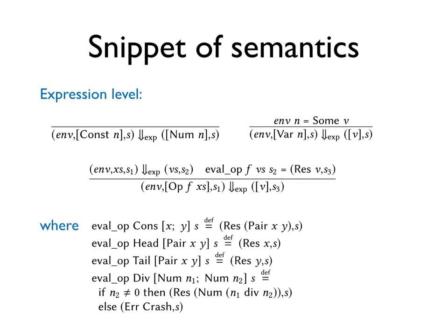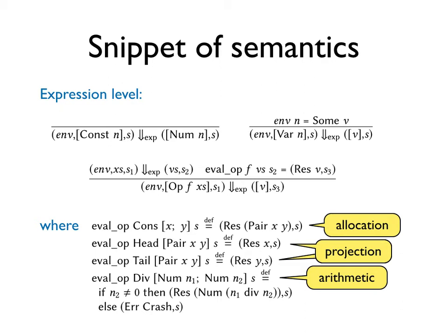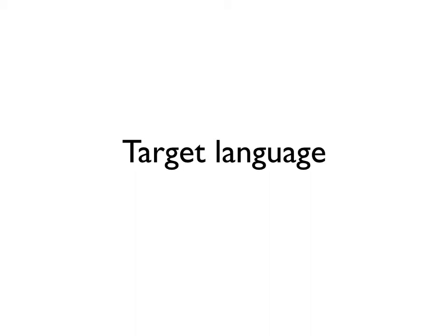The semantics of primitives is defined in terms of eval_op. Here we see the semantics of cons, which performs allocation. And of head and tail, which perform projections. And div, which is division over natural numbers.